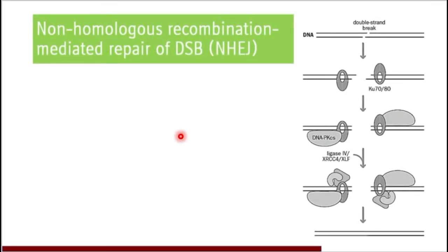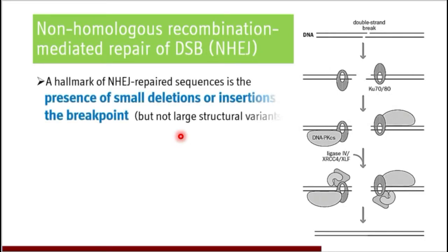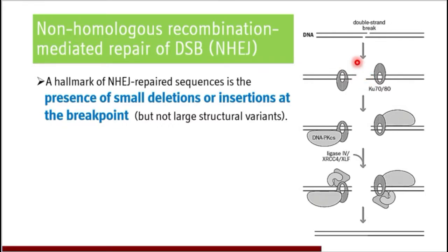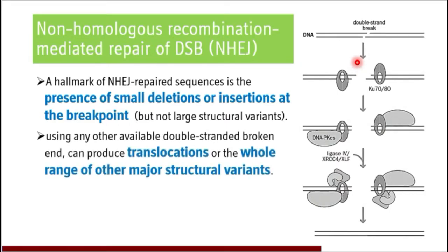Coming to non-homologous recombination mediated repair of double strand breaks in DNA, also abbreviated as NHEJ. The hallmark of NHEJ is the presence of small deletions or insertions at the break points. At these break points there are chances that small deletions or insertions will occur — small deletions of the ends of these double strand breaks, or some sequences of DNA will be added to these breaks.